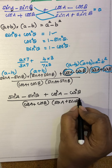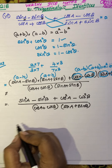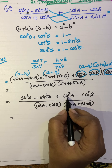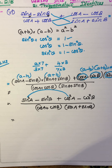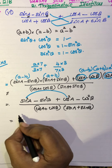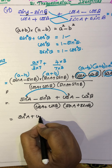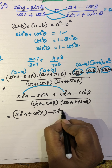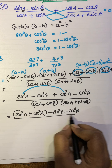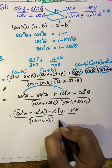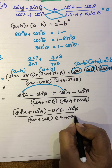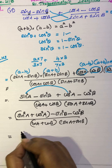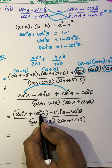Now let us find what we get in the numerator. We have sin²A and cos²A together — that is sin²A + cos²A, which equals 1. So grouping those gives us 1.